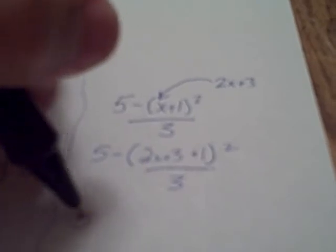So we had five minus x plus one squared, the x plus one squared is divided by three. We want to plug two x plus three into there. So five minus two x plus three plus one quantity squared all over three. And all we're going to do is just simplify this down a little bit. It isn't necessary for you to multiply everything out, not really, because you can see inside the parentheses we've got a couple of terms that we can combine.